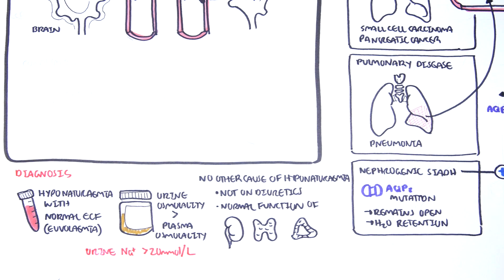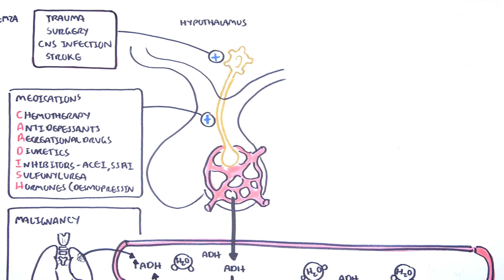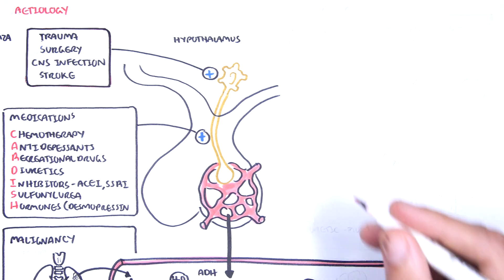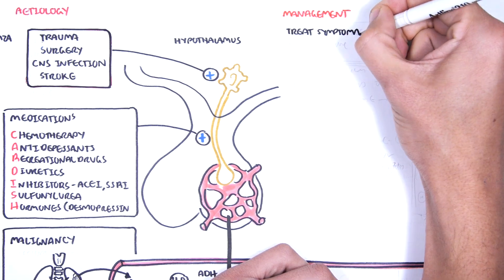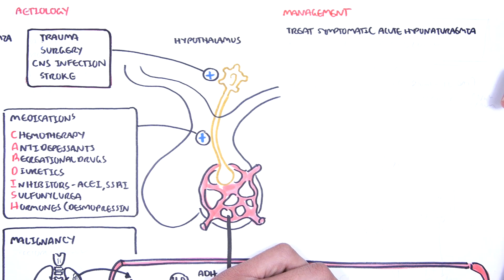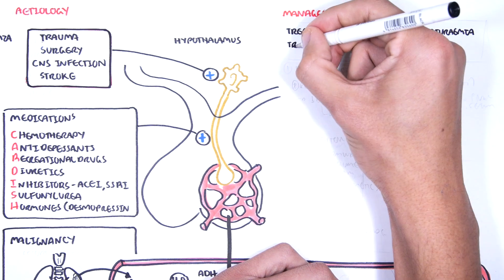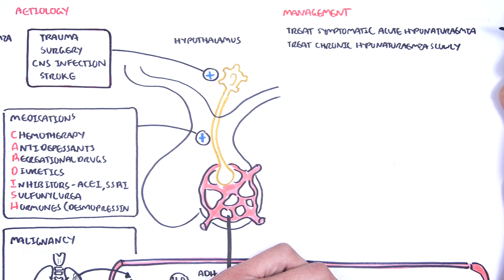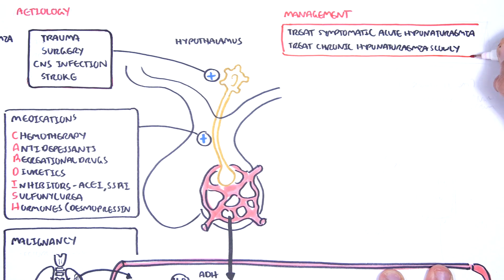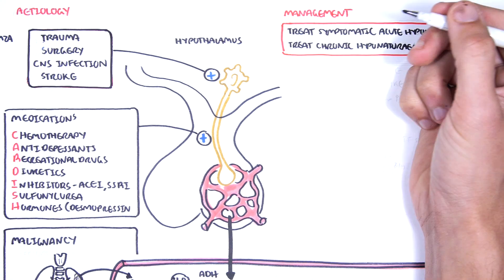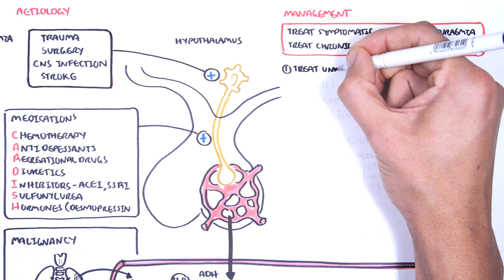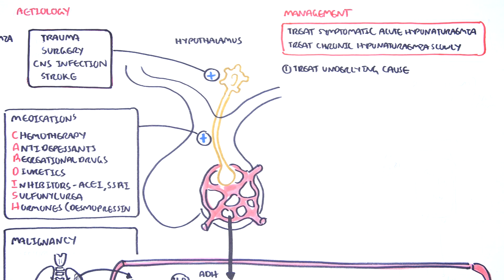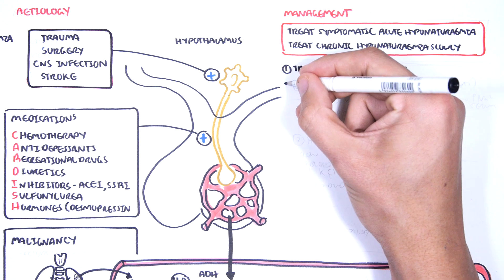Management of SIADH is relatively similar. First, treat symptomatic acute hyponatremia quickly, as this can be life-threatening. Treat chronic hyponatremia slowly. The reason for this is to prevent what's called central pontine myelinolysis, which we will talk about later. It's important to treat the main cause that could be leading to the low sodium and SIADH.